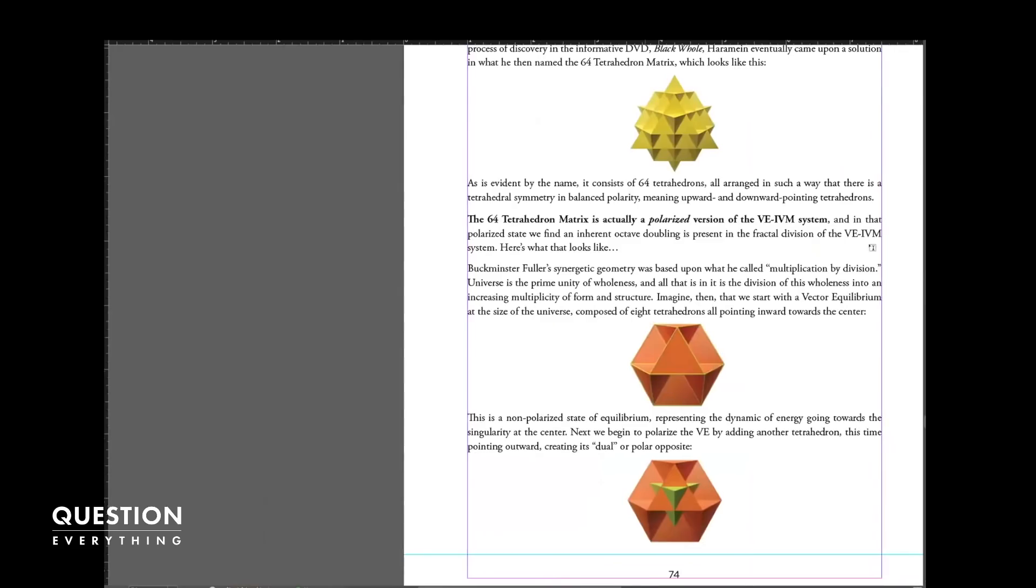This is the 64 geometry that Nassim discovered many years ago that is a balance of the polarities of this isotropic vector matrix. When you look at a single vector equilibrium, it has a tetrahedron going inward towards the center point towards singularity. So it's very convergent towards the zero point. It creates this balanced kind of unpolarized that can extend out from there into an isotropic vector matrix, an unpolarized field.